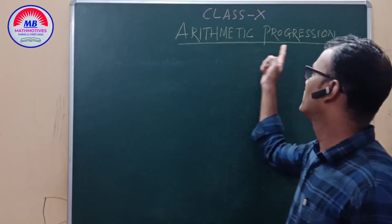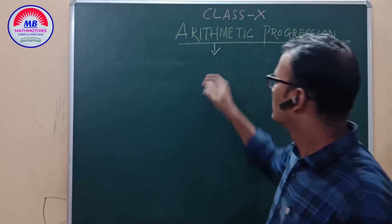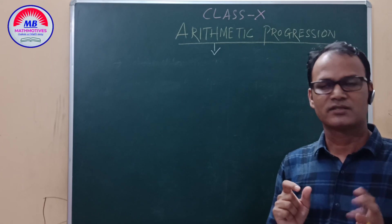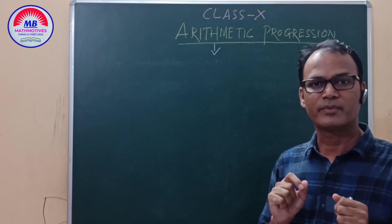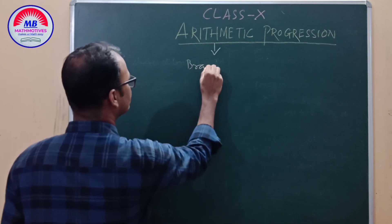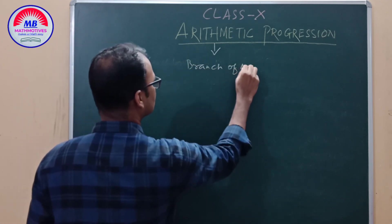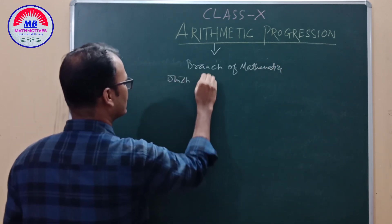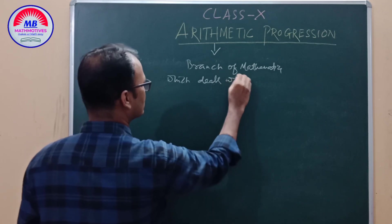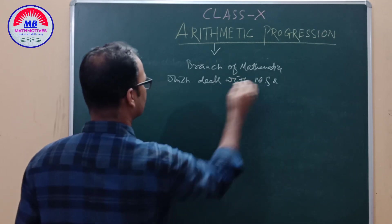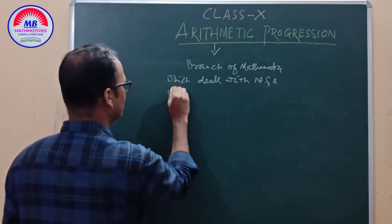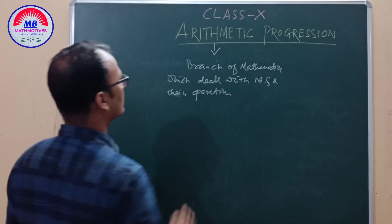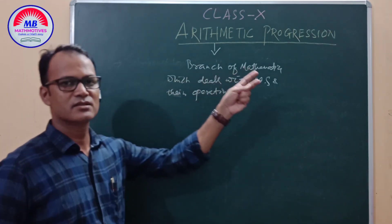What is Algebra? What do you mean by Algebra? Algebra is a branch of Mathematics which deals with numbers and its operations.